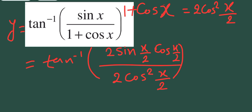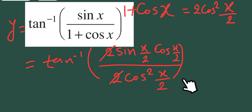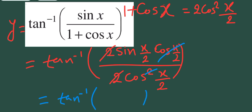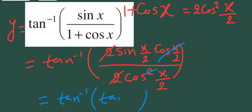Now we can simplify. The 2 in the numerator and the 2 in the denominator cancel. In the numerator we have sin(x/2) times cos(x/2), and in the denominator we have cos²(x/2), which is cos(x/2) times cos(x/2). One cos(x/2) cancels, leaving sin(x/2) over cos(x/2), which is tan(x/2). So inside the bracket we have tan(x/2).